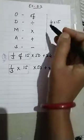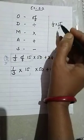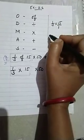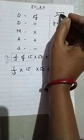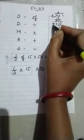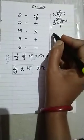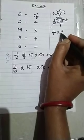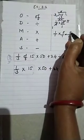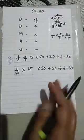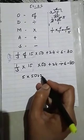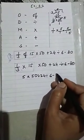1/3 × 15 — in fractions, if nothing is written, it means 1 is there. In the table of 3, 15 can be divided by 3: 3 fives are 15. So we get 1/1 × 5/1 = 5. After solving this operation we get 5. So we write 5 × 50 + 24 ÷ 6 − 80.